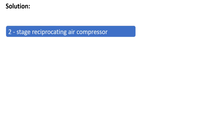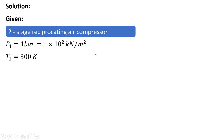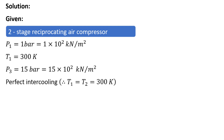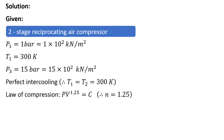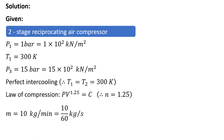This is a two-stage reciprocating air compressor. The suction pressure is 1 bar, converted to 100 kilopascal, since 1 bar equals 10² kilopascal. T1 is given as 300 Kelvin in absolute terms. Delivery pressure is 15 bar, which is 1500 kilonewton per meter square. Since intercooling is perfect, T1 equals T3 equals 300 Kelvin. The polytropic index n is 1.25, as compression index is less than 1.4. Mass flow rate is 10 kg/min, converted to 10/60 kg per second.